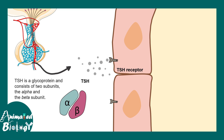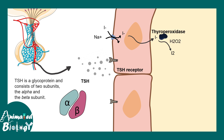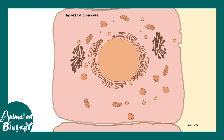The TSH hormone is a glycoprotein with two subunits, alpha and beta. For simplicity, they are shown as dots. What really happens when TSH binds to the TSH receptor? One of the most important events is upregulation of the iodine transporter. It allows a lot of iodine to get inside the thyroid follicle and reach the colloid. Eventually, the iodine ion would be converted into the molecular form with the help of thyroperoxidase enzyme.